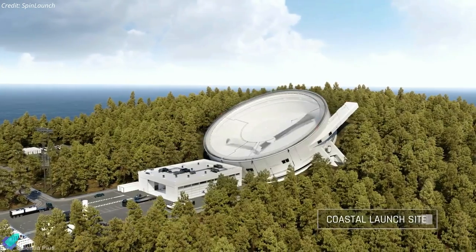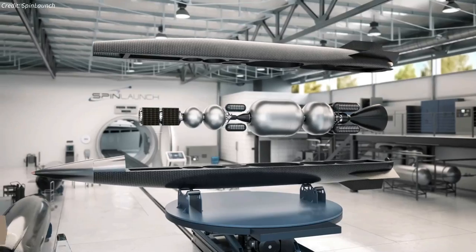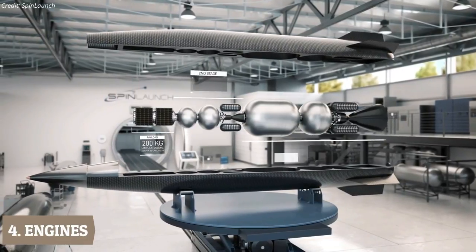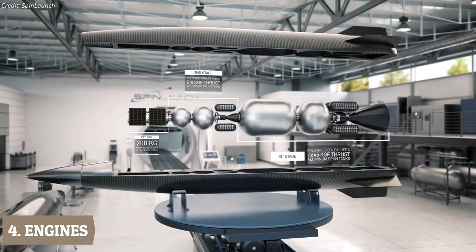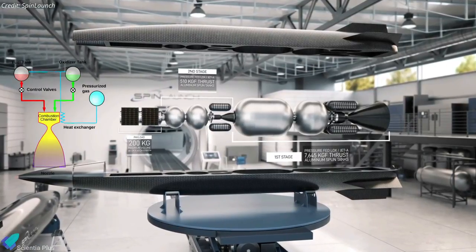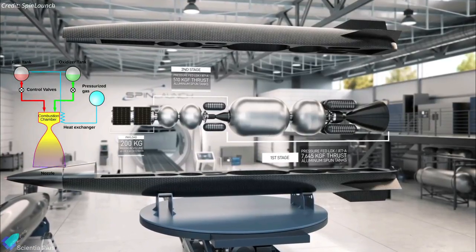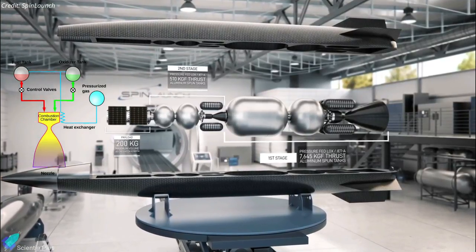Spin Launch has been working on other elements of the system besides the giant accelerator, such as the rocket engines that will serve as upper stages to place payloads weighing up to 200 kilograms into orbit. Those engines will be conventional bi-propellant designs, but be incredibly low-tech versions with pressure-fed systems and few parts, intended to be built cheaply and in large quantities.